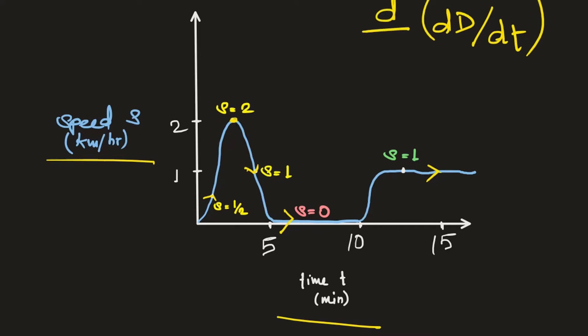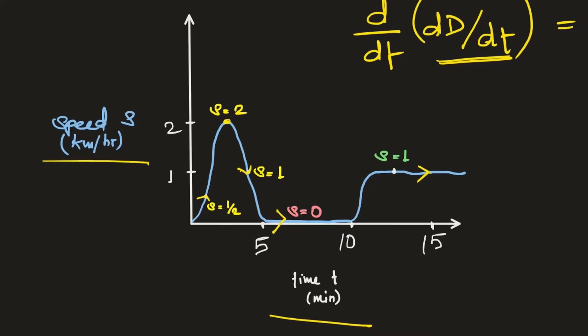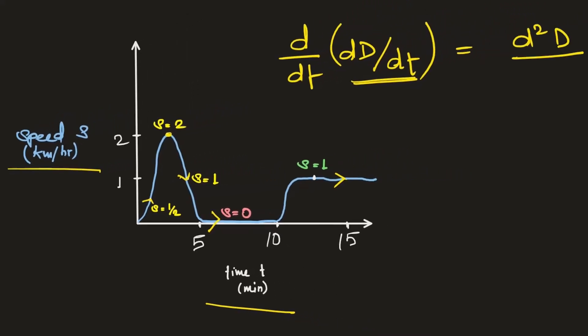Now if we want to do the derivative of this as well — to see how with a small change in time this value is changing — then that will be denoted as d²s/dt². This is the notation for the second order derivative. We started from zero with a slower speed, then the speed started increasing, and then it started decreasing.